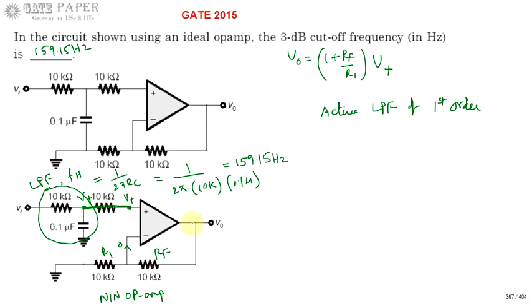So the output of low pass filter is amplified by two times and appears at the output V0. That is the purpose of active filter. The answer for this one is 159.15 hertz. Thank you.